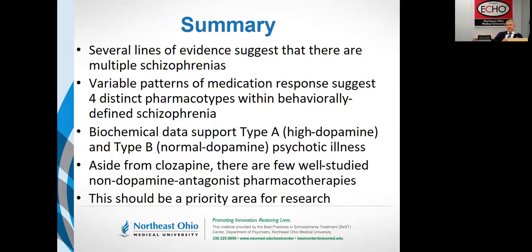To summarize: there is lots of evidence that schizophrenia is not a single disease. The variable patterns of medication response suggest at least four different diseases under the hood. The low-hanging fruit is to parse psychosis into high-dopamine and normal-dopamine states. People that don't have dopamine disease don't get better with dopamine drugs.